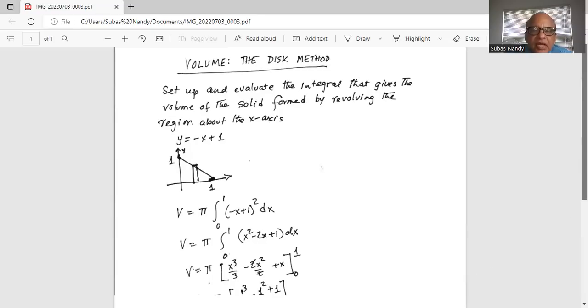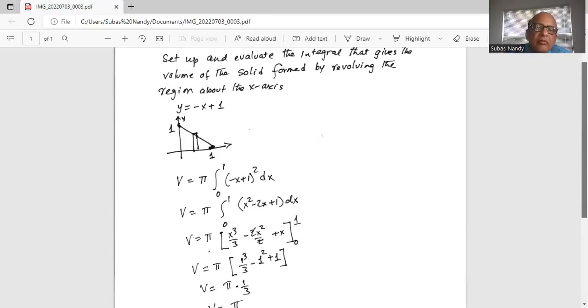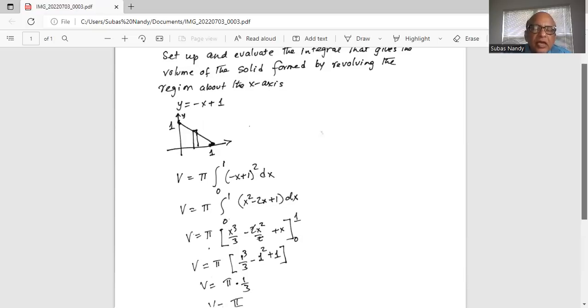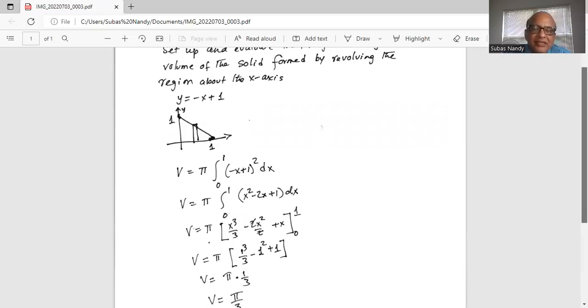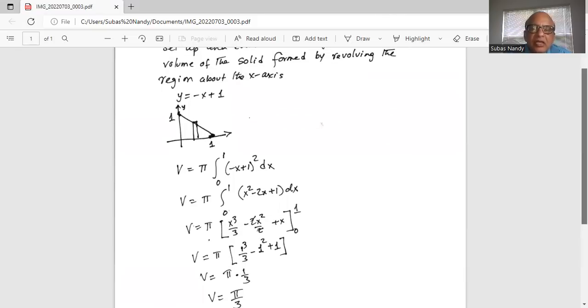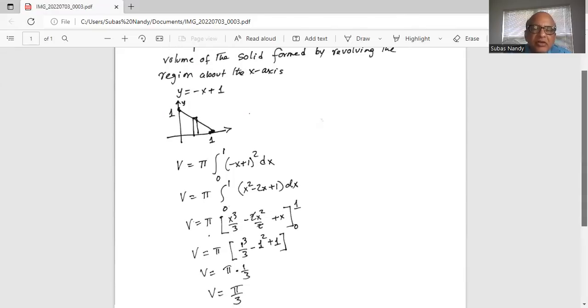First, we expand the squared term. Negative x plus one squared equals x squared minus 2x plus one. The limits of integration do not change; they are still zero and one.